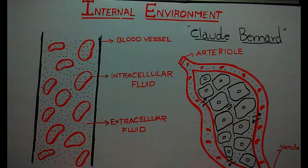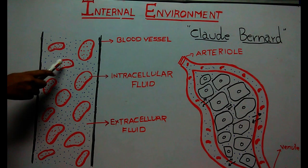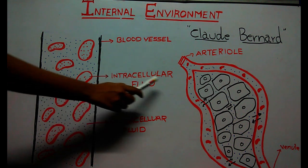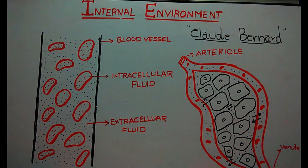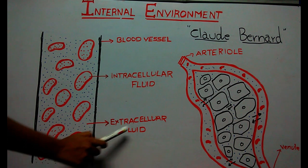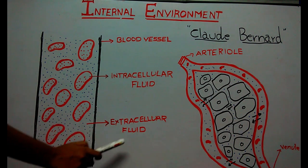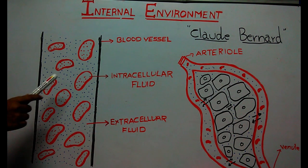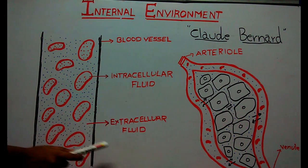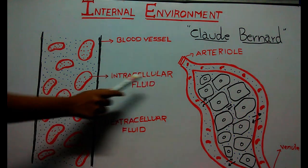About 60% of the adult human body is fluid. Of this, most of the fluid is inside the cells and is called intracellular fluid, and one-third of the fluid is outside the cells and is called extracellular fluid.